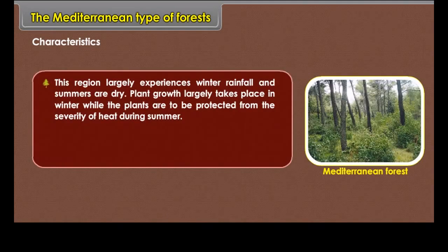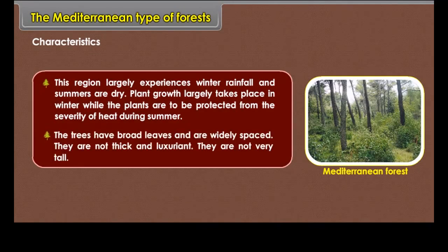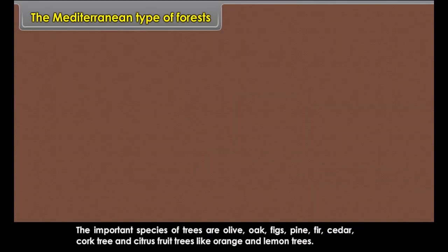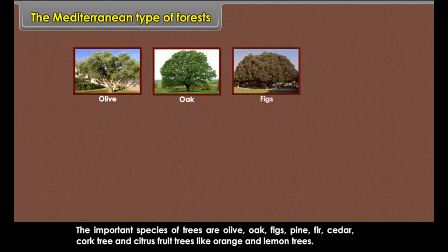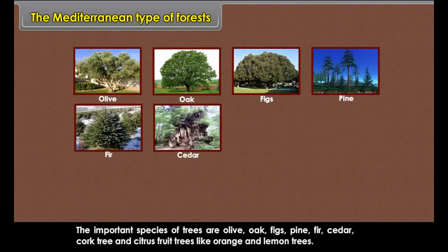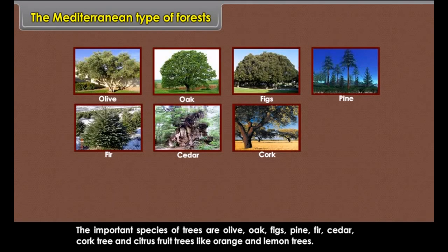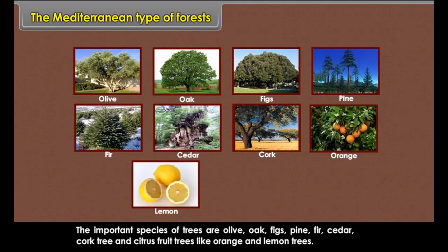Characteristics. This region largely experiences winter rainfall and summers are dry. Plant growth largely takes place in winter while the plants are protected from the severity of heat during summer. The trees have broad leaves and are widely spaced. They are not thick, luxuriant, or very tall. The important species of trees are olive, oak, figs, pine, fir, cedar, cork tree and citrus fruit trees like orange and lemon trees.